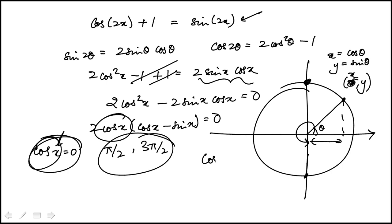Next, we're looking for when cosine x is equal to sine x, and that's going to happen at 45 degrees or pi over 4 in the first quadrant.